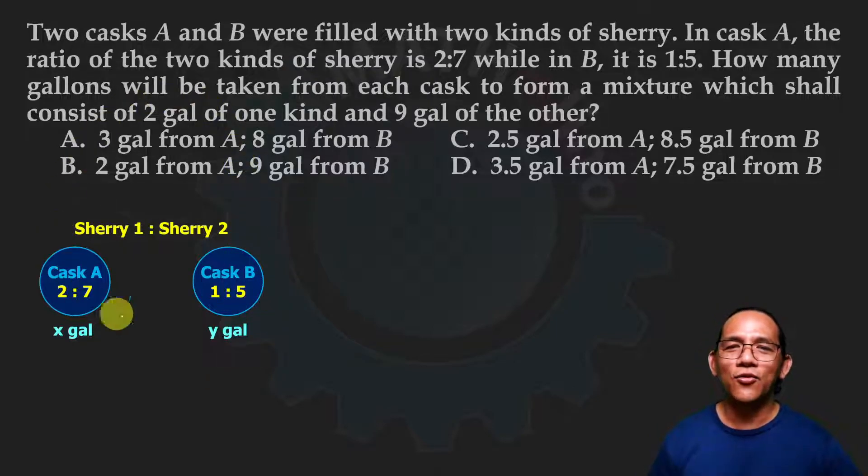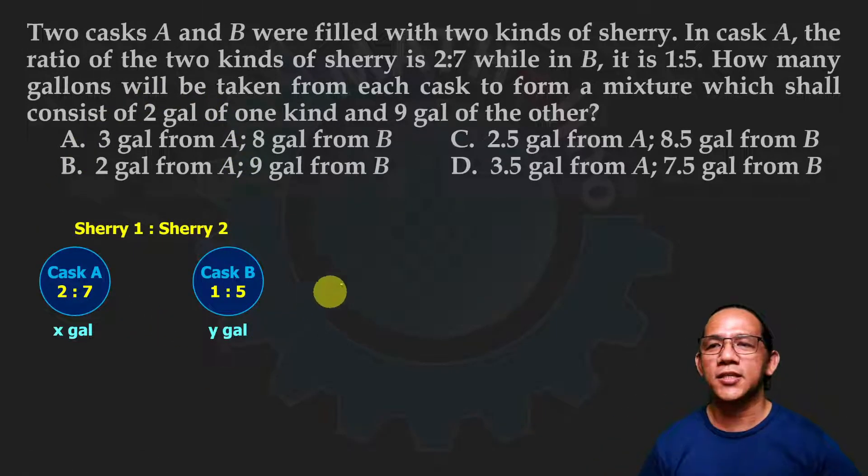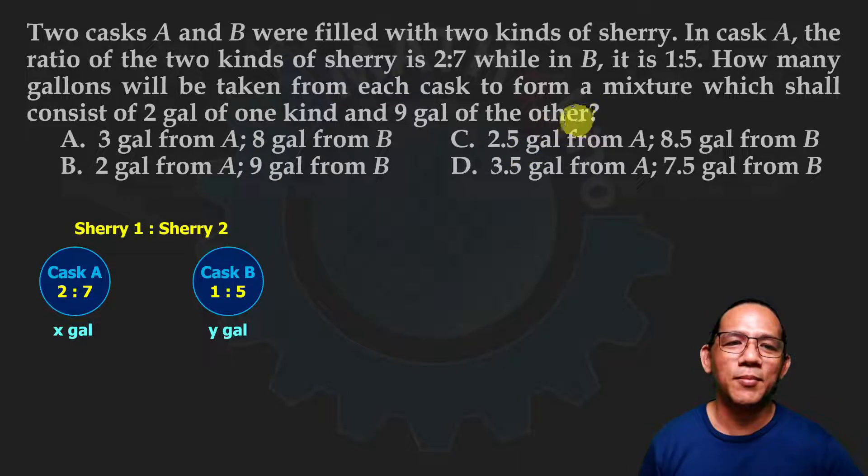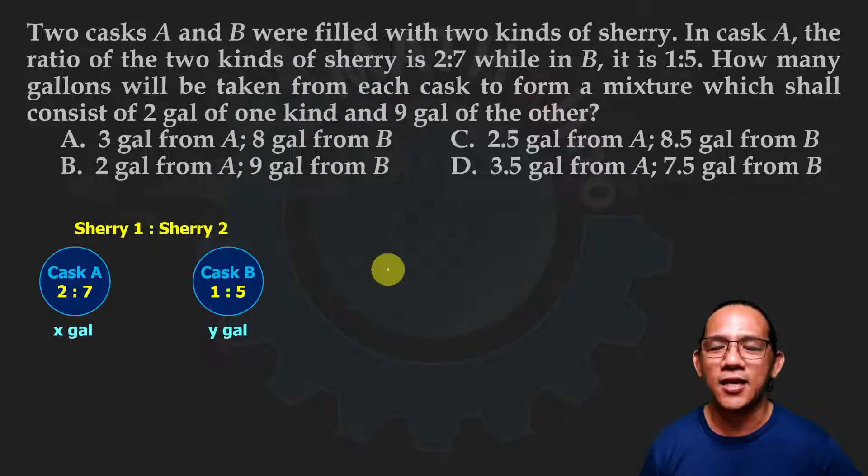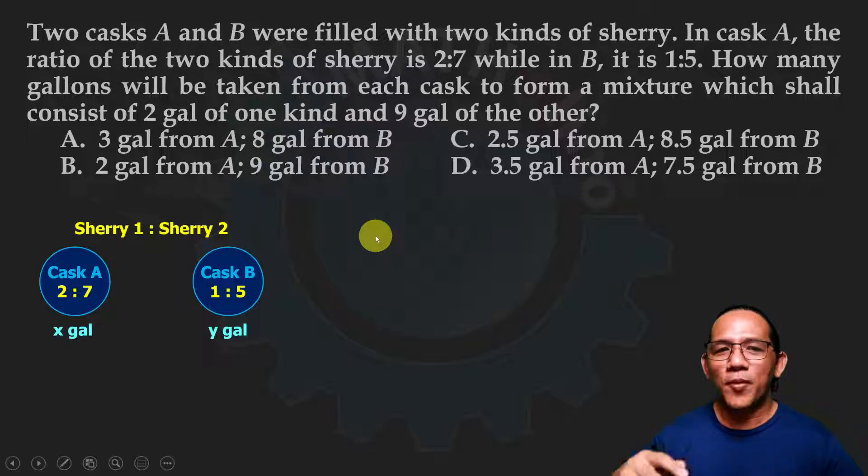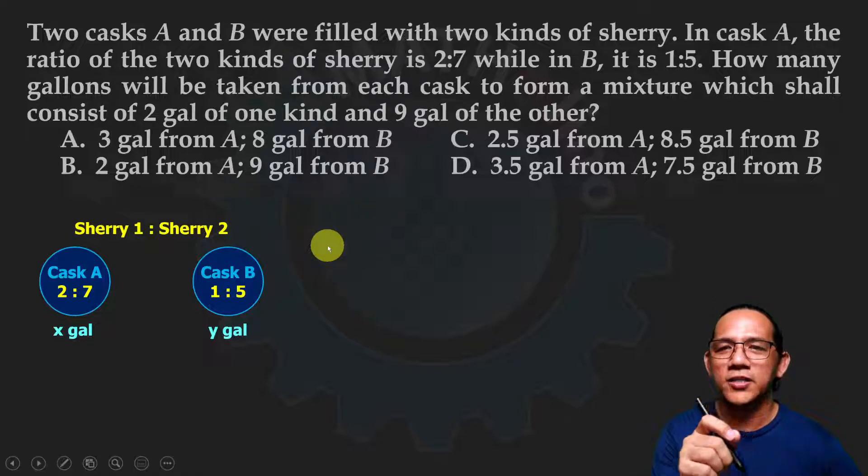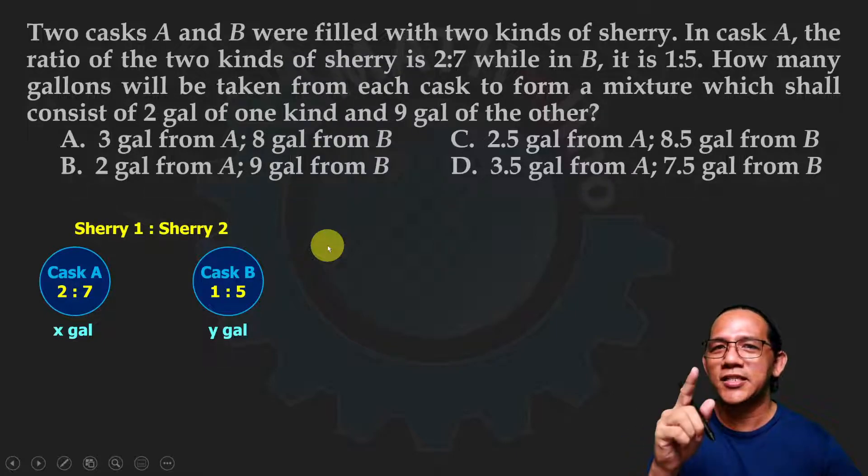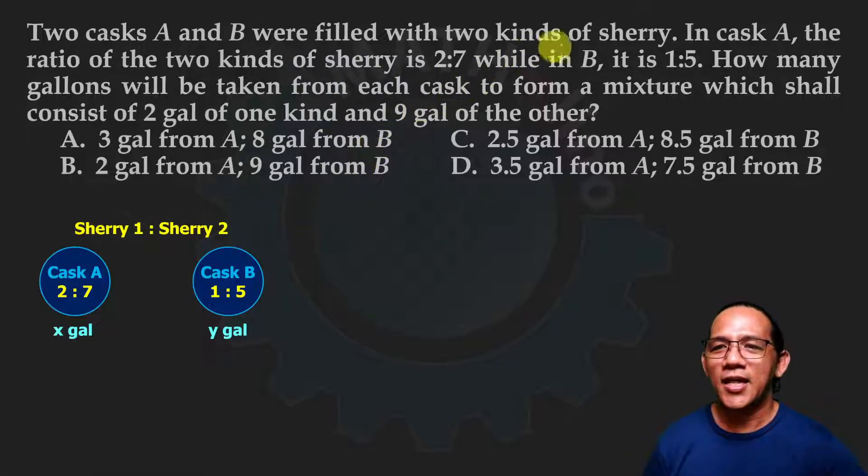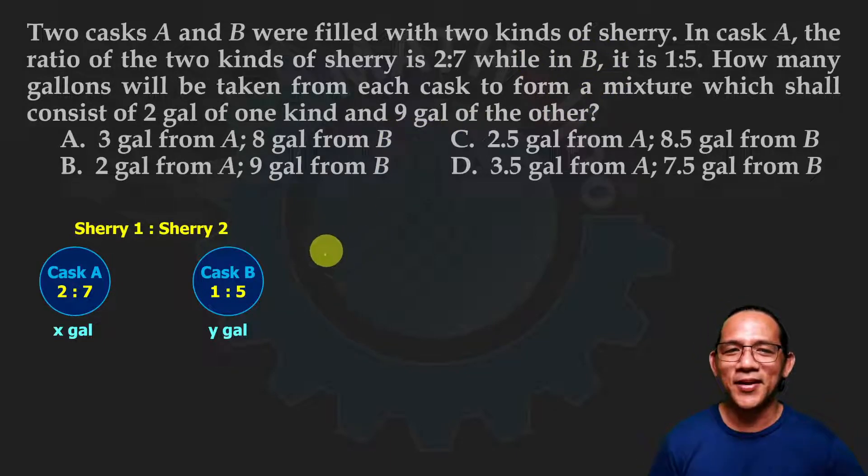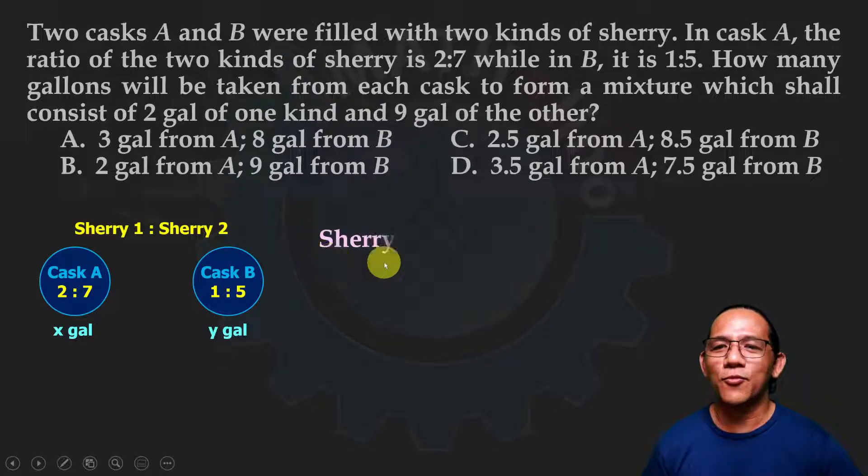Now for this type of problem that contains multiple substances, don't mix the substances together in the equation. We can solve them together but you should only solve for one substance at a time. In this problem, our substance is the sherry. So sherry one first.